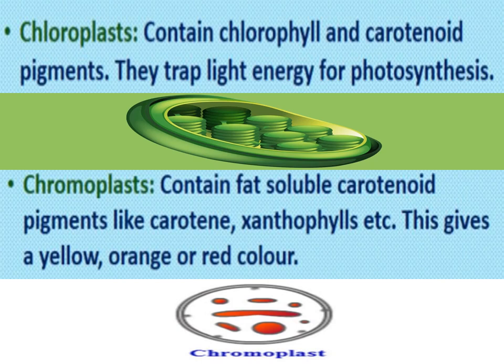The next type of plastid is chromoplast. Chromoplasts contain fat-soluble carotenoid pigments like carotene and xanthophylls. These pigments give a yellow, orange, or red color to the plant parts containing them.